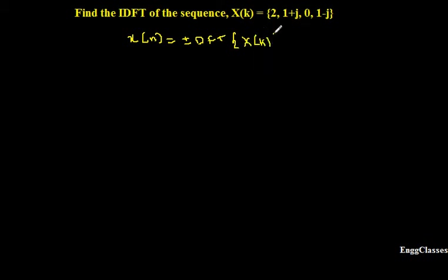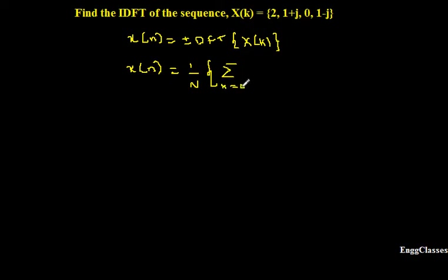So how do I find that? I already have the formula. X of N is equal to 1 divided by N, summation K equal to 0 to N minus 1, X of K, W_N to the power minus K into N. So this is the formula to find the IDFT of any sequence.